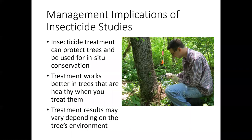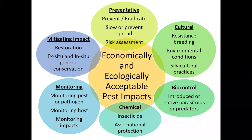In terms of implications of our insecticide studies: we've seen that insecticide treatment can protect trees, especially when they start out healthy, and it can be used for in-situ conservation of ash genetic diversity. Treatment results may also vary depending on the initial health of the tree and the tree's environment. Many scientists and I are all working on all of these different tools and strategies for managing emerald ash borer, and those strategies may become even more powerful when combined in different situation-specific ways. I'm hopeful that integrated pest management strategies will allow us to minimize the impact of emerald ash borer in both urban areas and forests.